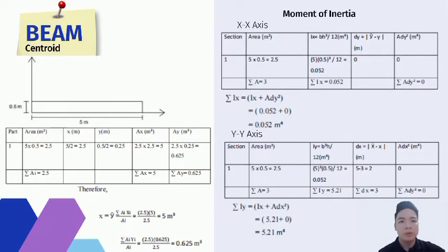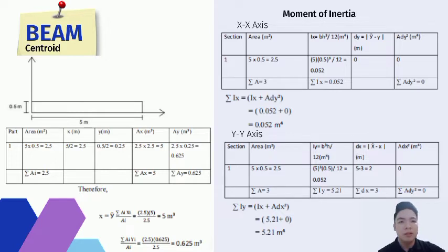For the centroid, the value is 0.625 m as shown in the calculation. Based on the moment of inertia calculations, the x-axis gives 0.052 and the y-axis gives 5.21. Conclusively, this beam structure is considered safe and strong.